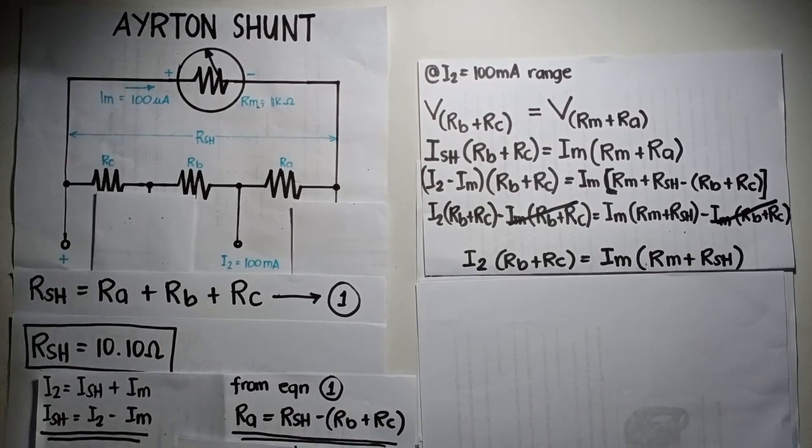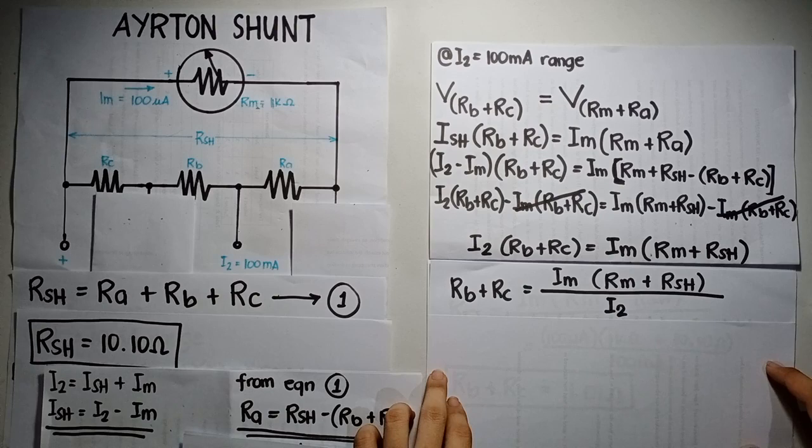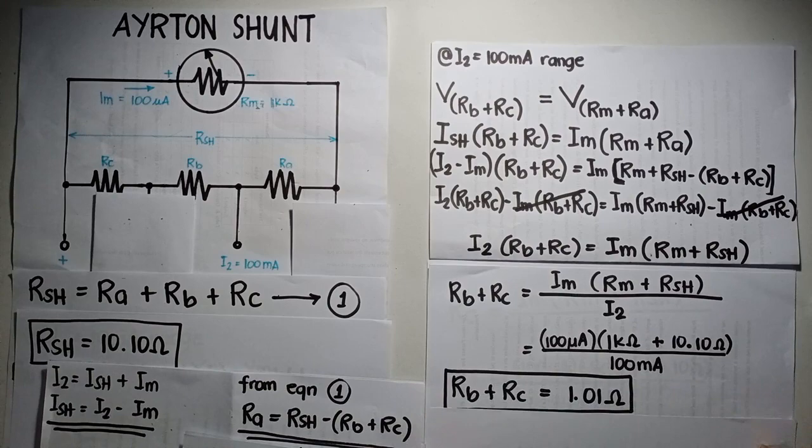Now, we can get the equation for Rb plus Rc, which is Im times the quantity of Rm plus RSH all over I2. Substitute the given values. Rb plus Rc is equal to 1.01 ohm.